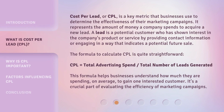Cost Per Lead, or CPL, is a key metric that businesses use to determine the effectiveness of their marketing campaigns. It represents the amount of money a company spends to acquire a new lead. A lead is a potential customer who has shown interest in the company's product or service by providing contact information or engaging in a way that indicates a potential future sale. The formula to calculate CPL is quite straightforward: CPL equals total advertising spend divided by the total number of leads generated. This formula helps businesses understand how much they are spending, on average, to gain one interested customer. It's a crucial part of evaluating the efficiency of marketing campaigns.